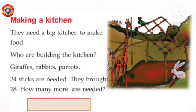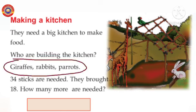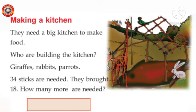Third activity: making a kitchen. The animals need a big kitchen to make food. Who are building the kitchen? Giraffes, rabbits, and parrots. 34 sticks are needed. They brought 18. How many more are needed? What should be added to 18 to get 34?